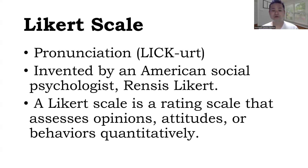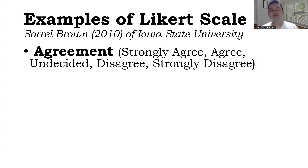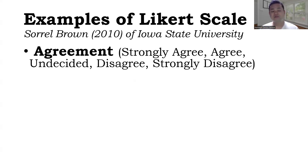We have different examples of Likert scale. This is a list created by Sorrel Brown in 2010 from Iowa State University. For example, a level of agreement: strongly agree, agree, undecided, disagree, and strongly disagree. You'll find this very common in research — strongly agree would be 5, agree would be 4, undecided would be 3, disagree would be 2, and strongly disagree would be 1. There are different variations of agreement; these are just some examples.